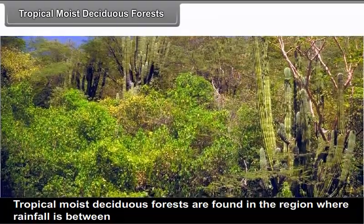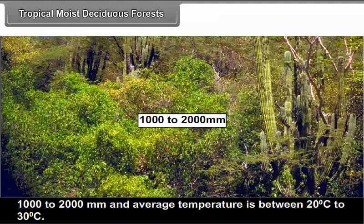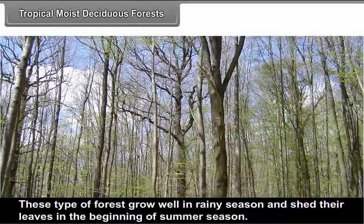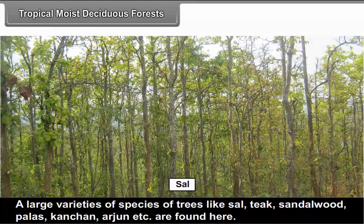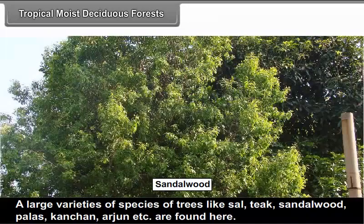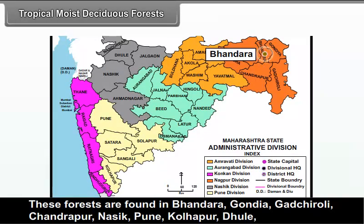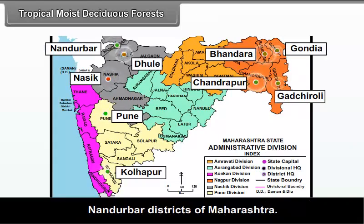Tropical moist deciduous forests are found in regions where rainfall is between 1,000 to 2,000 mm and average temperature is between 20°C to 30°C. These forests grow well in the rainy season and shed their leaves at the beginning of summer. They grow as tall as 30 to 40 meters. Tree species include Sal, Teak, Sandalwood, Paras, Kanchan and Arjun. These forests are found in Bhandara, Gondiya, Gadchiroli, Chandrapur, Nashik, Pune, Kolhapur, Latur, Nandurbar districts of Maharashtra.